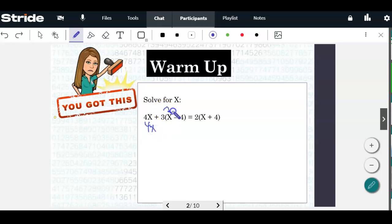So we need to do distributive property here. 3 times x is 3x, and then 3 times 4 is 12, and it's minus 12. Do distributive property here. It's 2x, and then 2 times 4 is 8. We're going to combine like terms. We have 4x and 3x is 7x. That's all we're doing in this step.